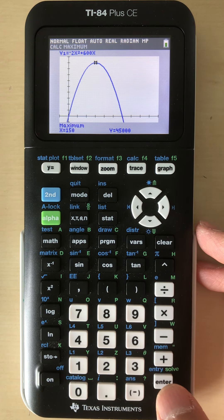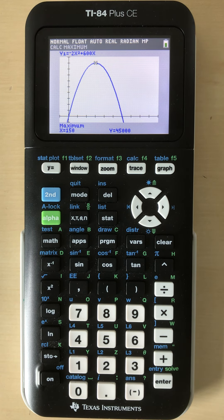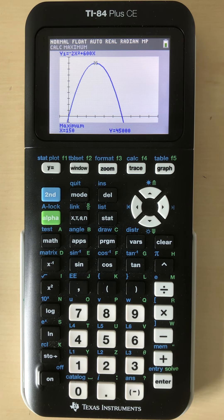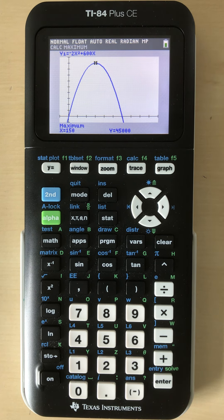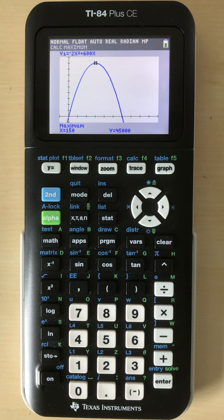Guess, yes. So it says the maximum occurs at x equals 150, y equals 45,000. What that means is to maximize the area to be 45,000 square meters, you need a width of 150 meters. That's what it's saying.